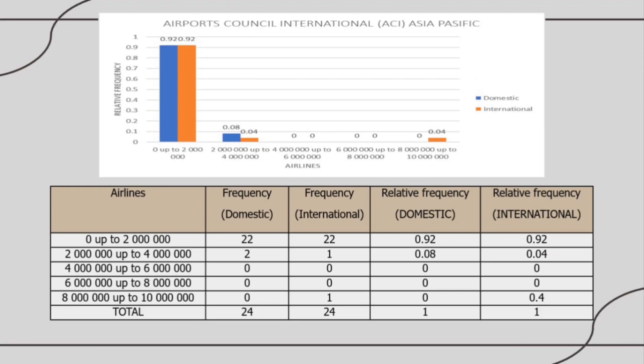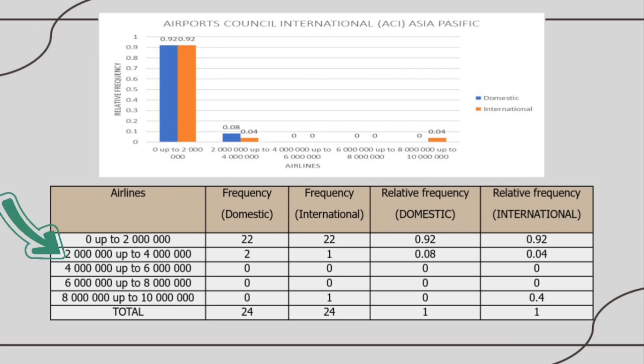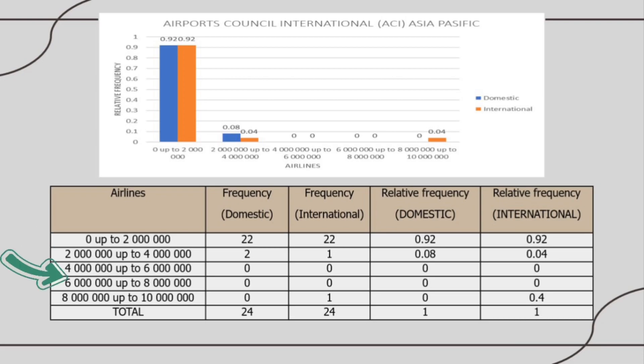This is the table that shows relative frequency for domestic and international, as well as histogram relative frequency. The graph shows that the relative frequency for domestic is decreased until class 2 million up to 4 million. For the international, the relative frequency is also decreased until class 2 million up to 4 million, but after class 6 million up to 8 million, it increased.